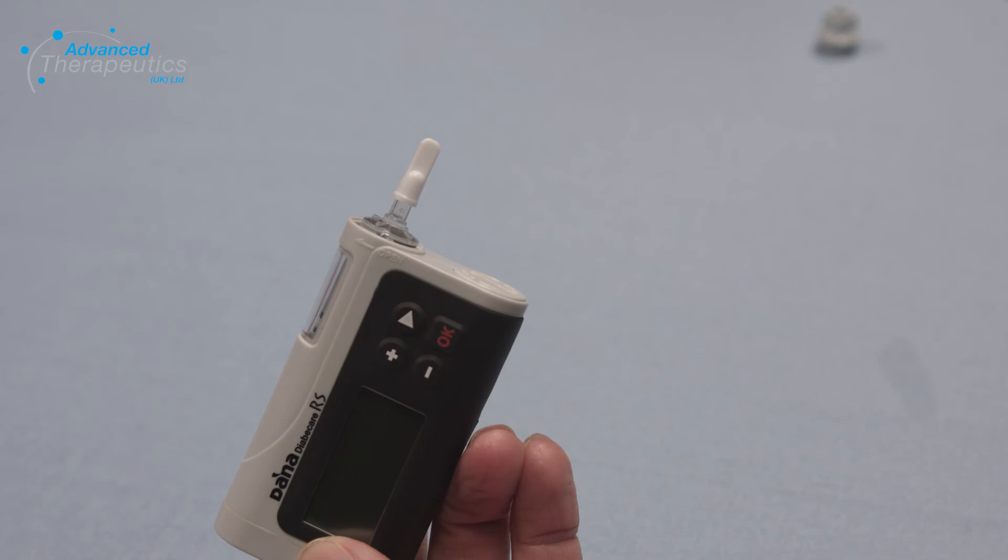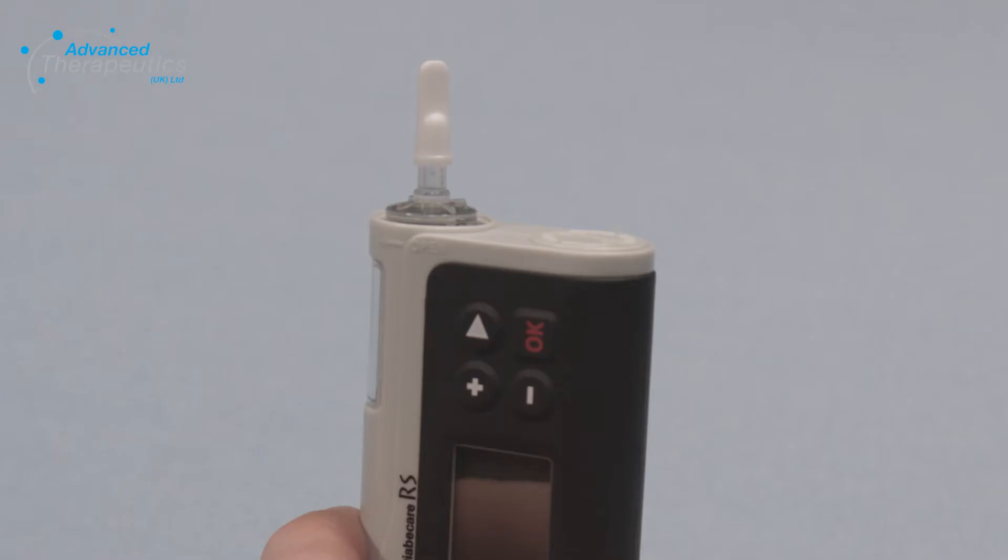Gently drop the reservoir into the pump, never force it in. If fitted correctly, the main body of the reservoir should protrude around one millimetre out of the pump.